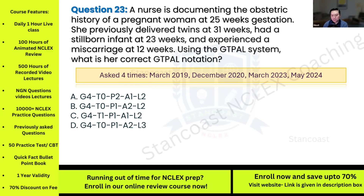Question twenty-three: A nurse is documenting the obstetric history of a pregnant woman at 25 weeks gestation. She previously delivered twins at 31 weeks, had a stillborn infant at 23 weeks, and experienced a miscarriage at 12 weeks. Using the GTPAL system, what is her correct GTPAL notation? This has been asked four times. Options: A) G4, T0, P2, A1, L2; B) G4, T0, P1, A2, L2; C) G4, T1, P1, A1, L2; D) G4, T0, P1, A2, L3.